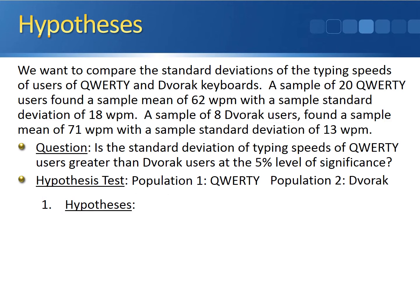To set up the hypotheses, notice that the question is framed in terms of standard deviation, but the actual test involves variances. There's no specific test for just the standard deviation, but since the standard deviation is the square root of the variance, the F-test for the ratio of two variances is equivalent to comparing the standard deviations. This means the hypotheses must be stated in terms of variances.